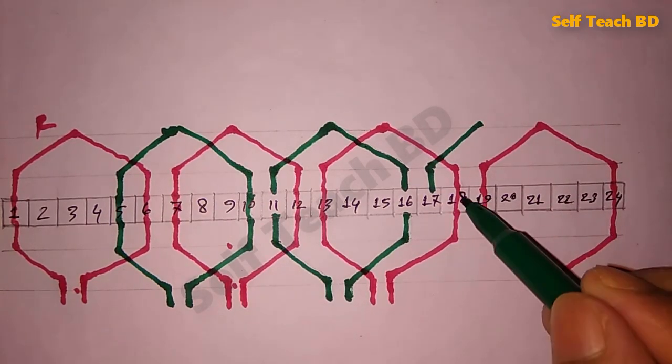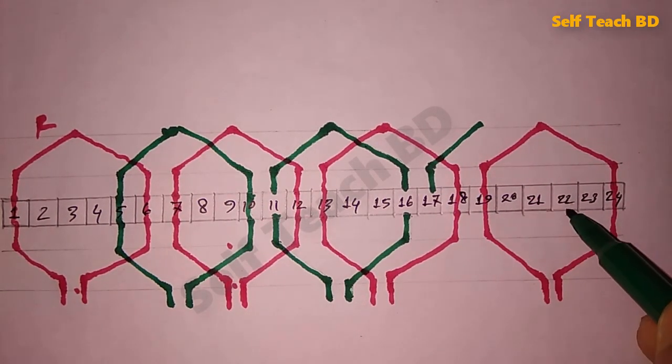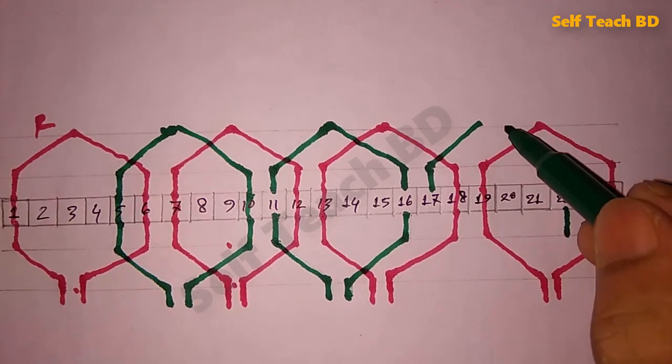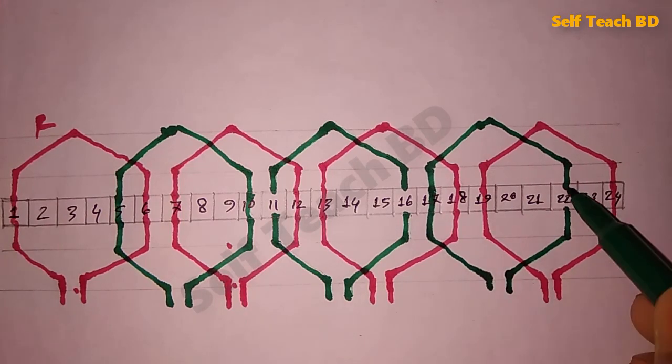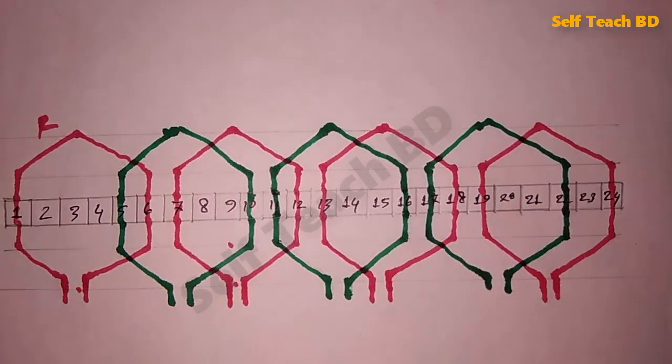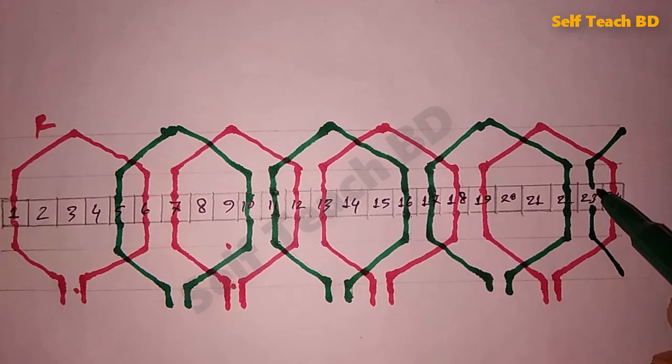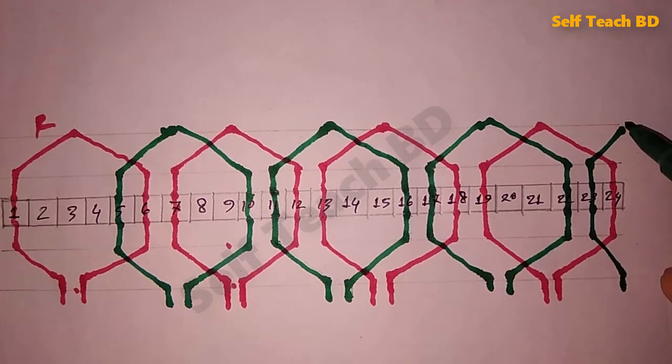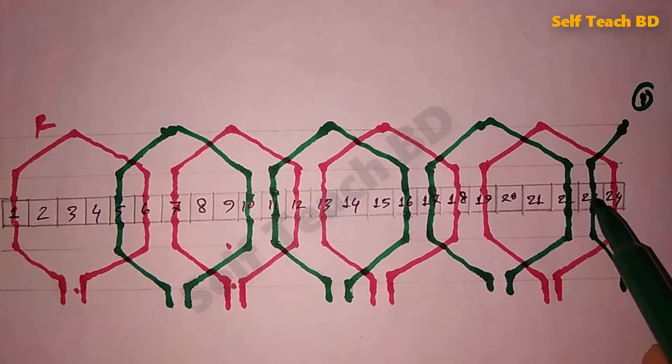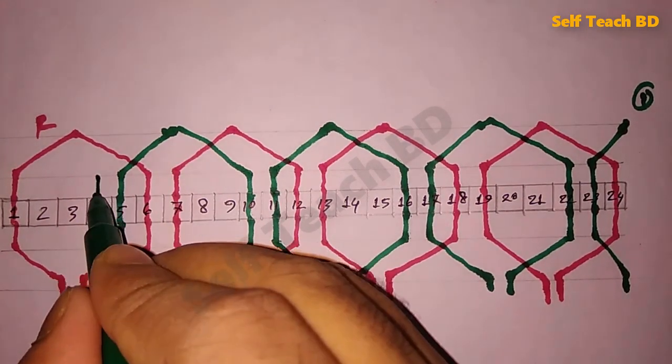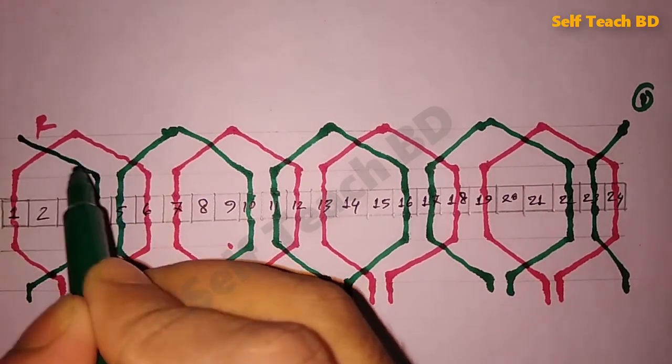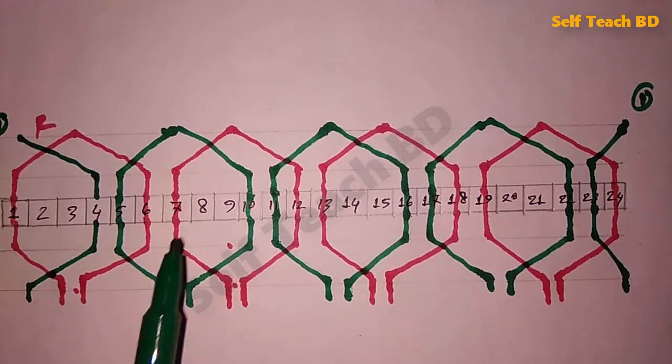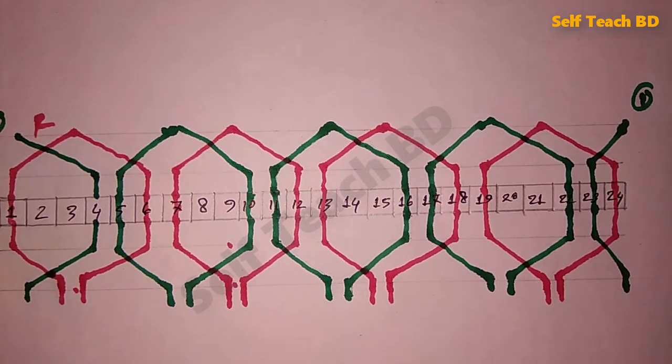Second phase third coil will start 17 to 22. Our second phase fourth coil will start 23 to 4, so our second phase 4 coils were drawn.